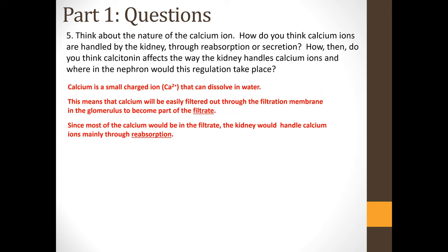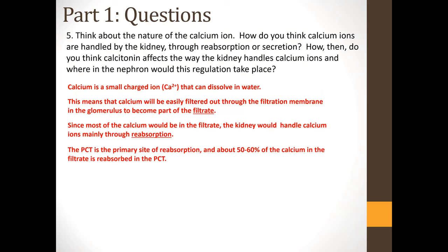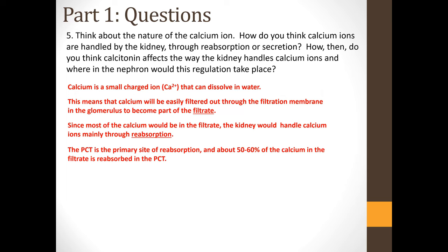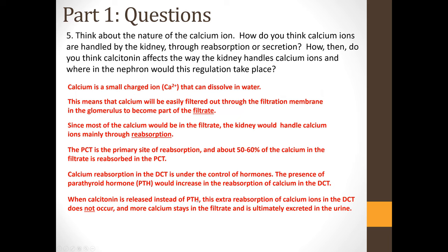Since most calcium ends up in the filtrate, the kidney handles calcium ions mainly through reabsorption — reabsorbing calcium out of the filtrate as needed. The PCT is the primary site, with about 50–60% of calcium reabsorbed there. Calcium reabsorption in the DCT is under hormonal control: parathyroid hormone increases reabsorption of calcium in the DCT. When calcitonin is released instead of parathyroid hormone, this extra reabsorption does not occur, so more calcium stays in the filtrate and is ultimately excreted in the urine.